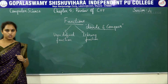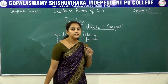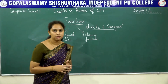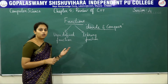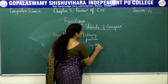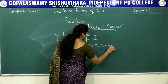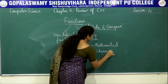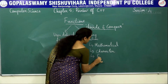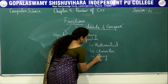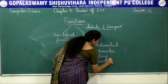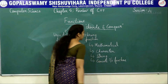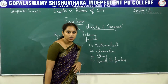What are library functions? Library functions are built-in functions which are grouped together and placed in a common place called a library. Library functions are of different types: the first is mathematical functions, the second is character functions, the third is string functions, and the fourth is console input-output functions. We have studied these functions in detail in the previous session.